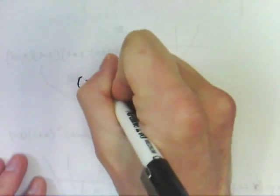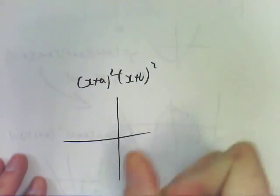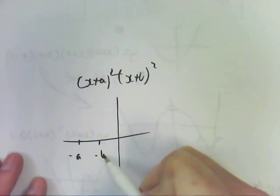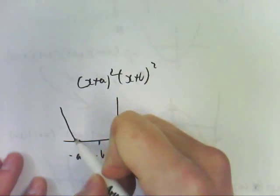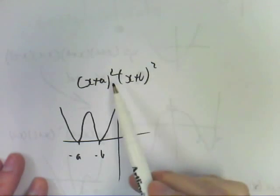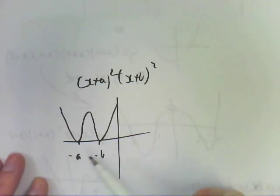It could also, actually one I didn't talk about was what if we had two lots squared. So if we have x plus a squared, x plus b squared, that graph is going to touch at negative a and touch at negative b. So it will do that, like a W touching at those points. So the number of distinct brackets you have tells you the number of distinct intercepts you have.